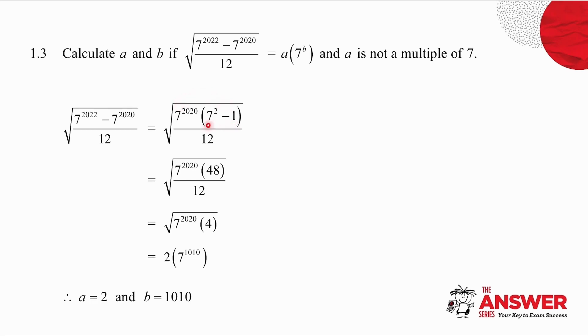7 squared, 49, minus 1, 48. 12 into 48 goes 4. And then I can take the square root of each one. The square root of 4 is 2. Divide your power by 2. You get 1,010. And again, I equate the A is 2 and the B is 1,010.